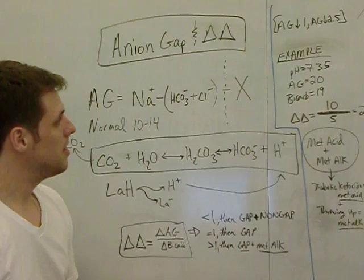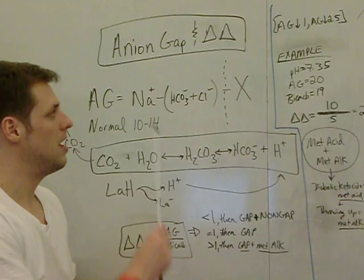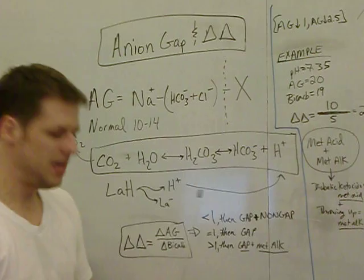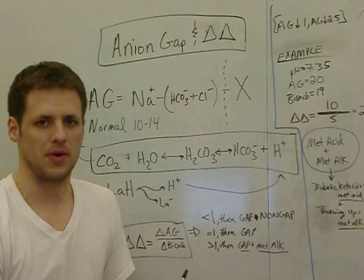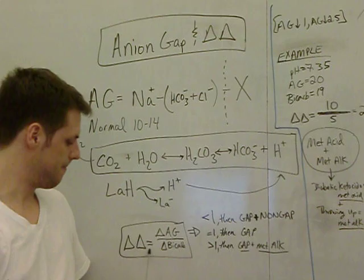Now, this should have all been a little bit of review for you. Perhaps the only new thing is talking about what the anion gap actually means. Now, if you have a metabolic acidosis and you want to be sure there's nothing else going on, you are going to calculate what we call a delta-delta, shown here.